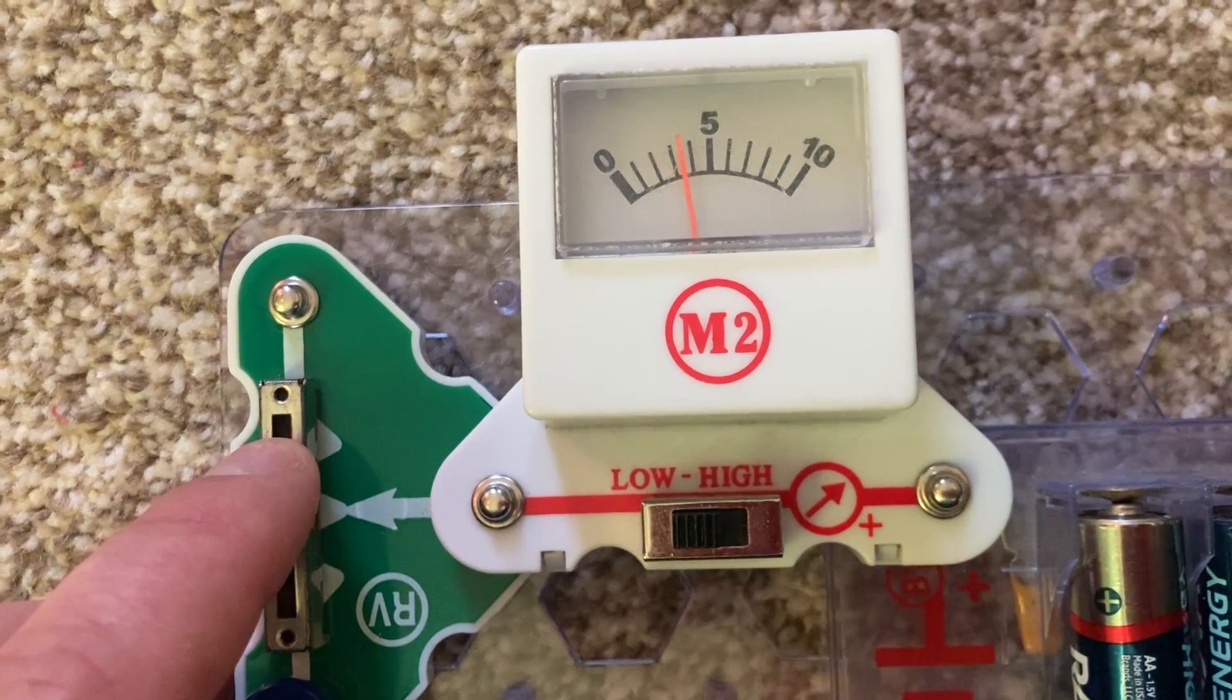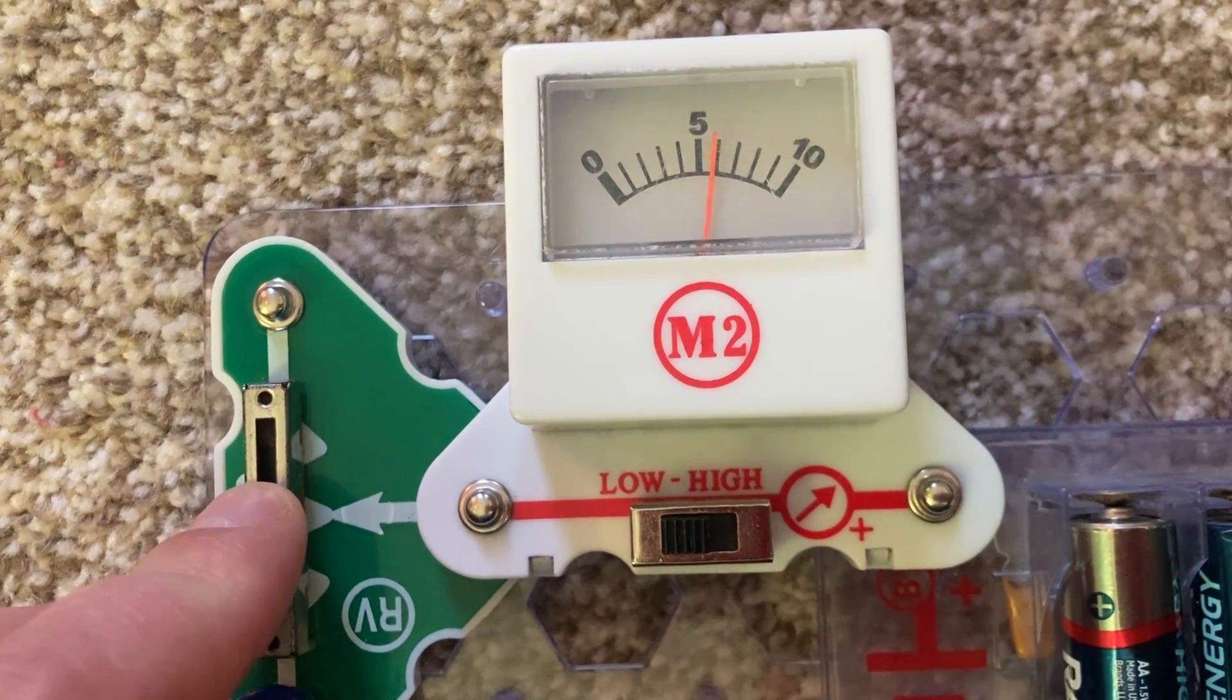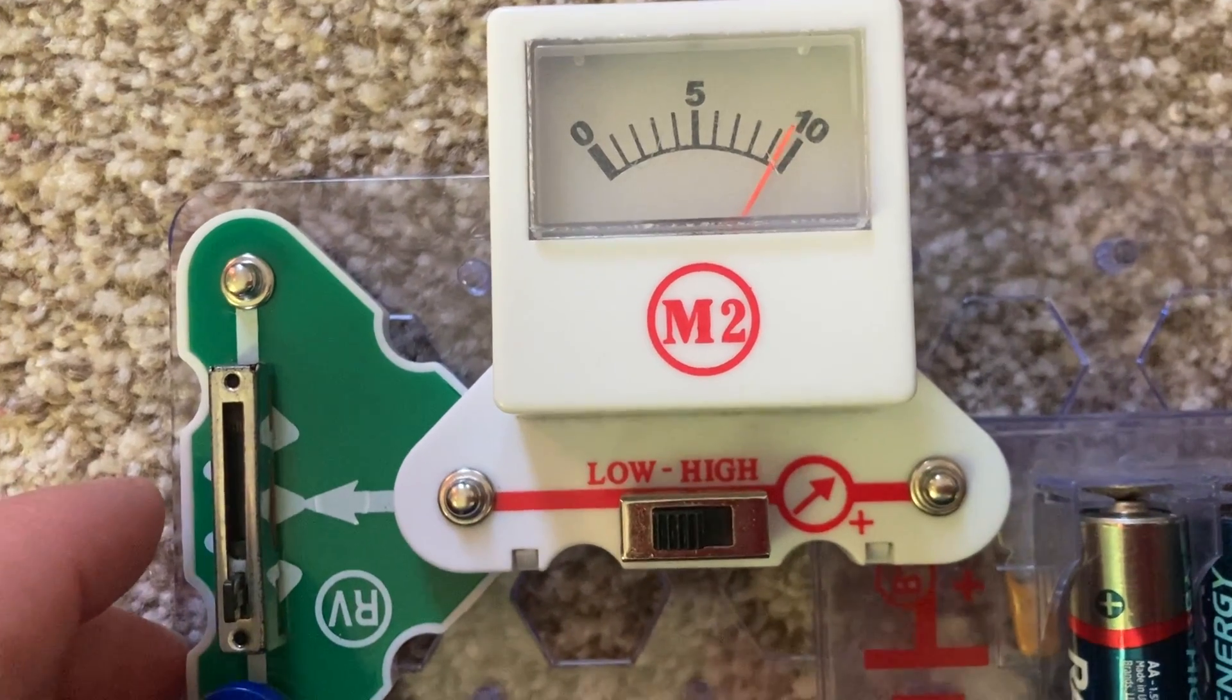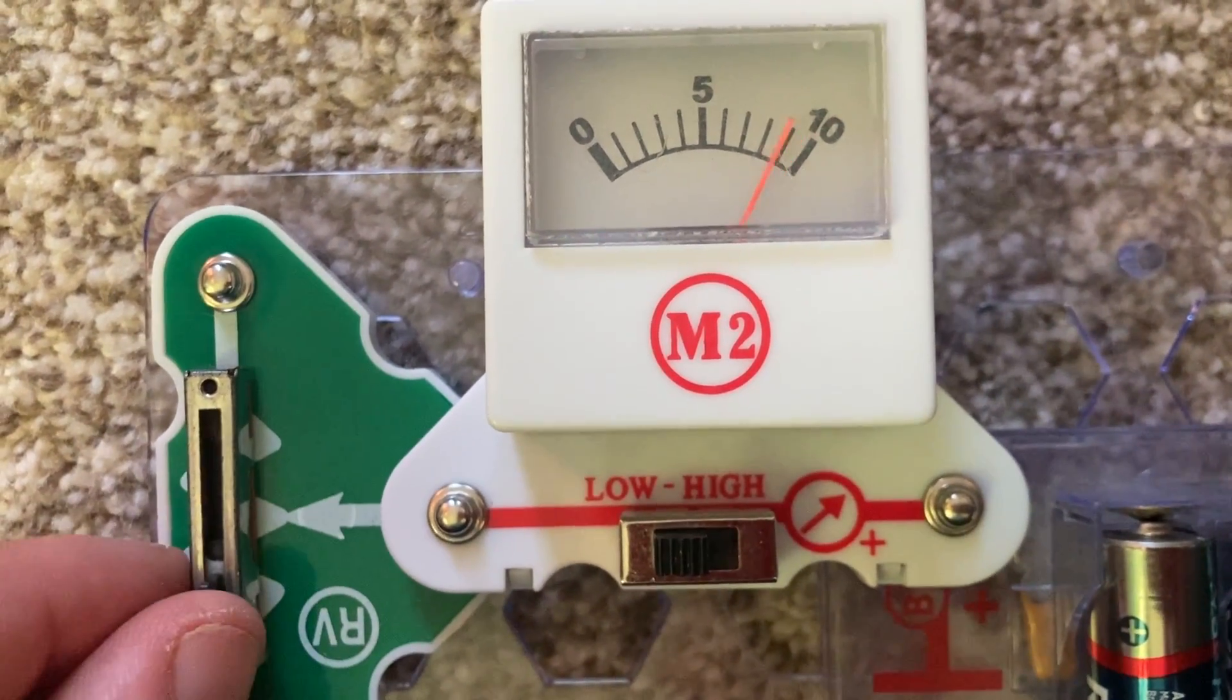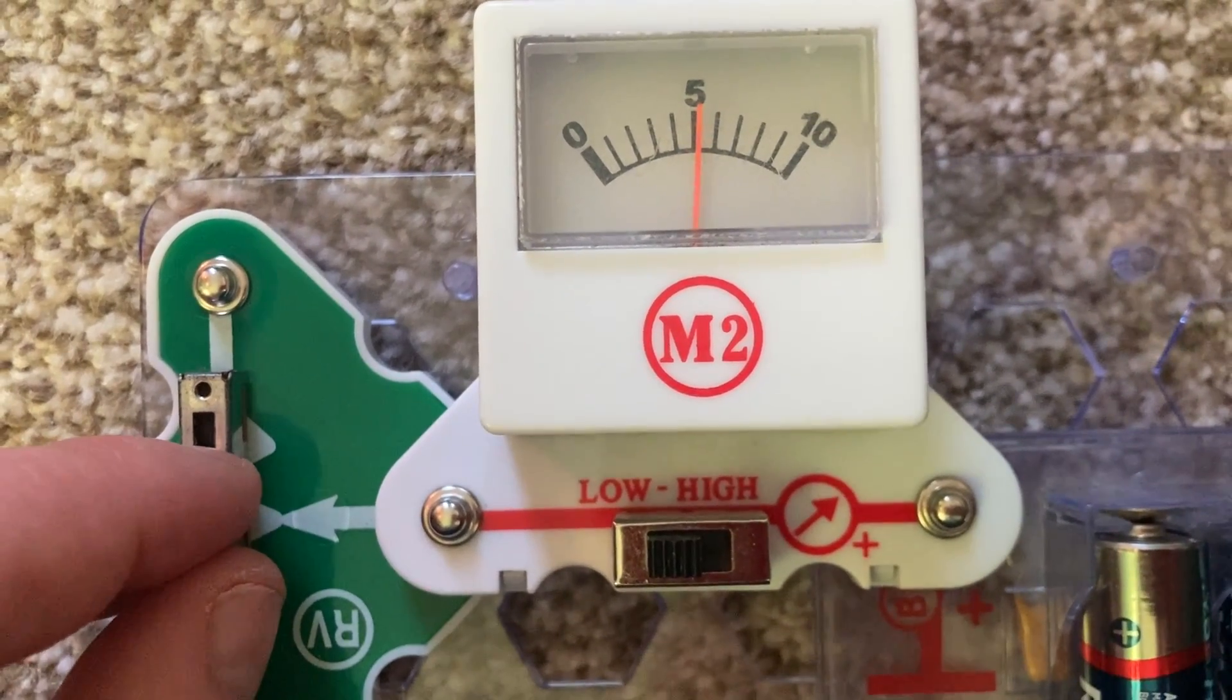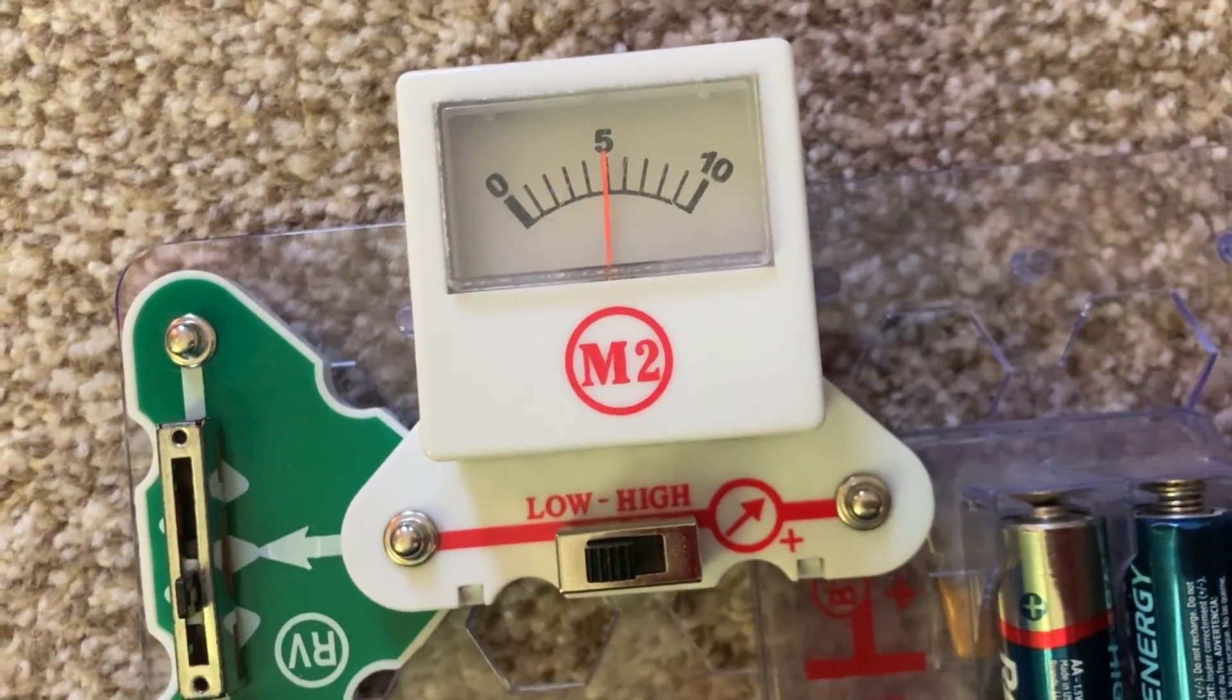But as I slowly move the lever on the adjustable resistor down, its resistance decreases. And now more current can flow through the circuit and therefore the meter. And now it's at 10, close to like about 9.5 milliamps. Move the lever back up and the resistance increases. Now, the amount of current flowing through the circuit is 5 milliamps.